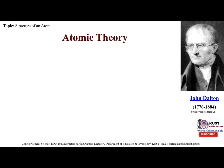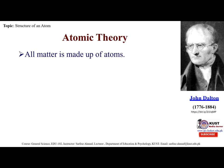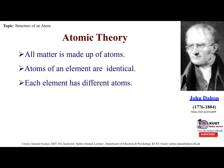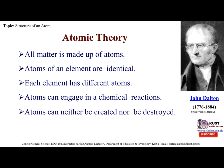Now, atomic theory. All matter is made up of atoms. These are the main points of the atomic theory of John Dalton: atoms of an element are identical; each element has different atoms; atoms can engage in chemical reactions; and atoms can neither be created nor destroyed. In the early 1800s, John Dalton noticed that chemical substances combine and break down by weight in proportions suggesting each chemical element is ultimately made up of tiny indivisible particles of consistent weight.